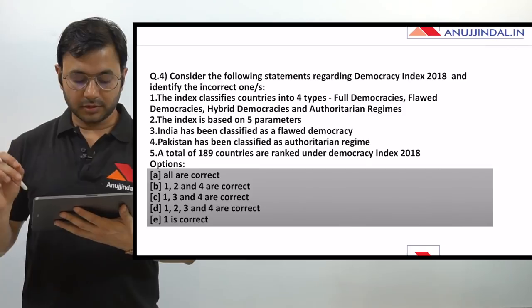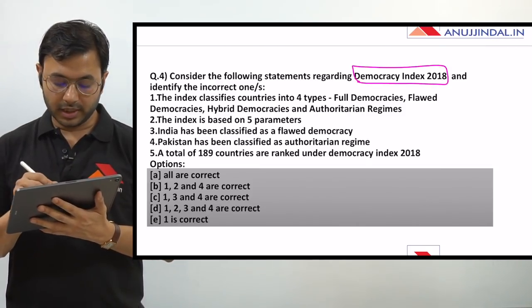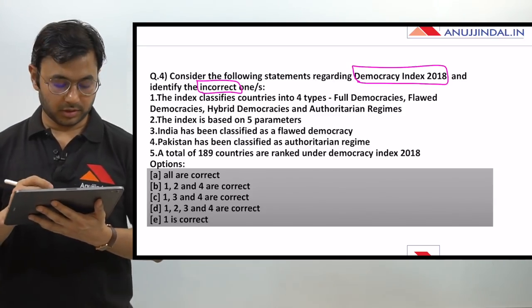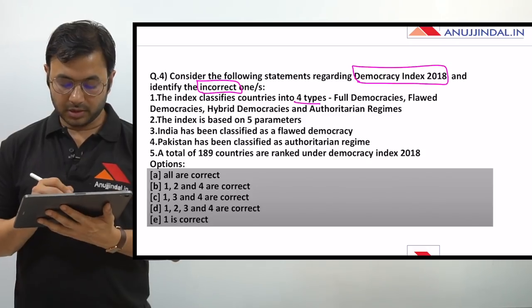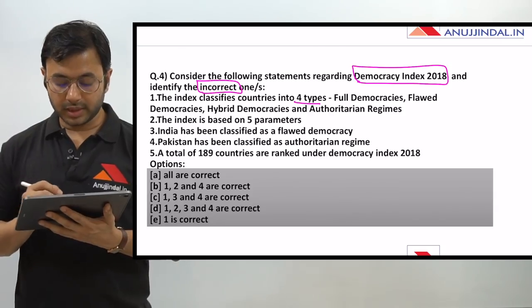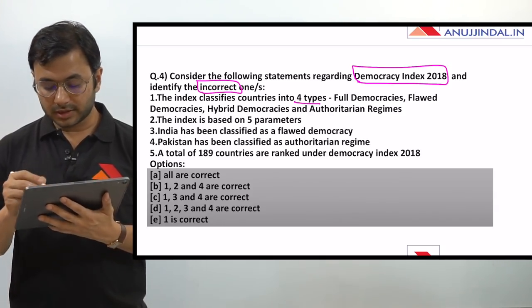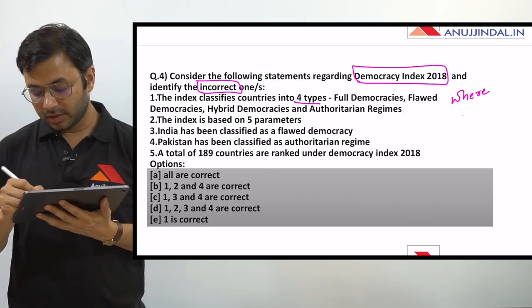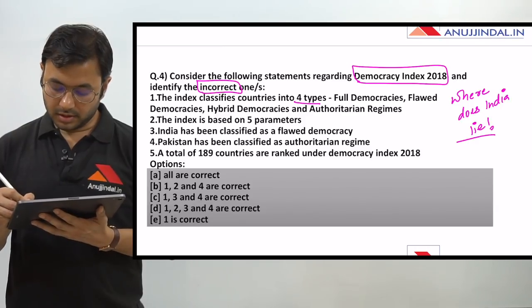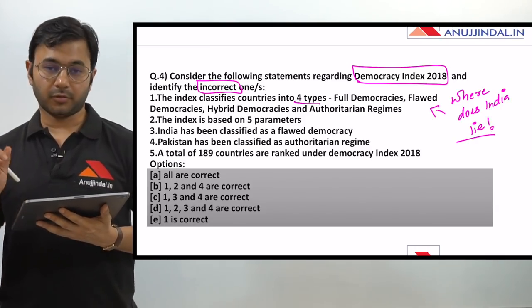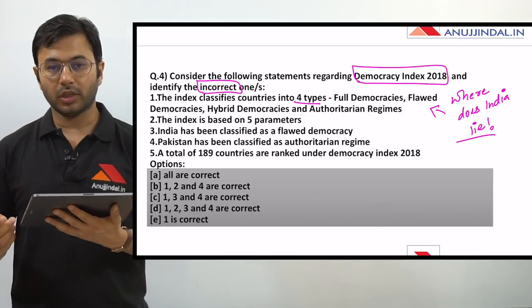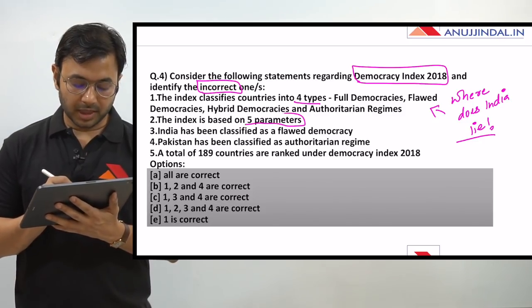Let us come to the next question. Consider the following statements regarding Democracy Index 2018 and identify the incorrect one. The index classifies countries into four types: full democracies, flawed democracies, hybrid democracies, and authoritarian regimes. Please tell me where does India lie among these four classifications - is it a full democracy, a flawed democracy, a hybrid democracy, or an authoritarian regime?